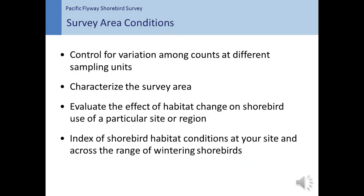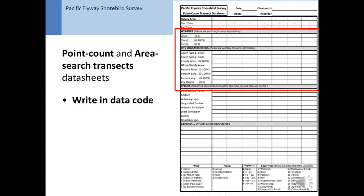Now that you have counted and recorded all of your shorebird and raptor observations, it is time to record the survey area conditions. Why record this information? This type of data helps control for variation among counts at different sampling units. For example, a survey area with little mudflat will likely have fewer shorebirds than a survey area with lots of mudflat. This data helps characterize survey areas and track changes to the habitat over time, which in turn can help explain changes in shorebird use of certain areas. The information you collect at your site will be used with data collected throughout the Pacific Flyway to assess habitat change at multiple scales. As we go over each survey area condition, please follow along with your datasheet.